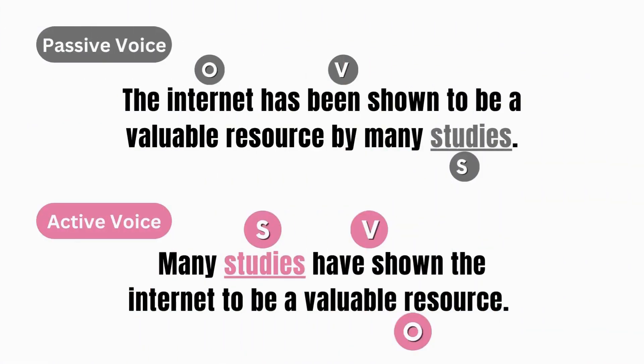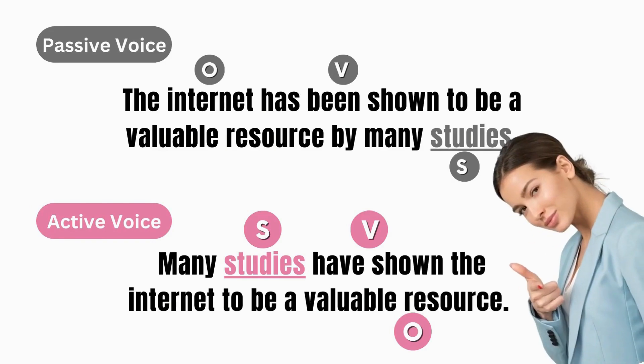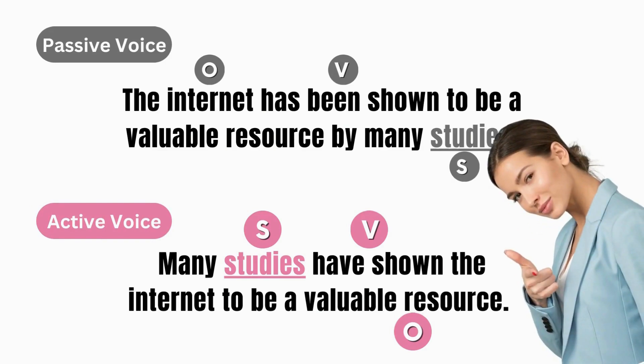Read and compare these two examples. Passive voice: 'The internet has been shown to be a valuable resource by many studies.' Active voice: 'Many studies have shown the internet to be a valuable resource.' Which sentence sounds more confident? The active voice — 'Many studies have shown the internet to be a valuable resource' — gives us the impression that the writer is sure about the statement.